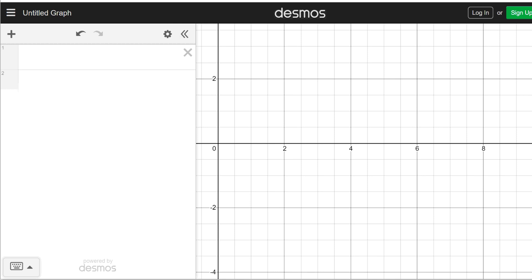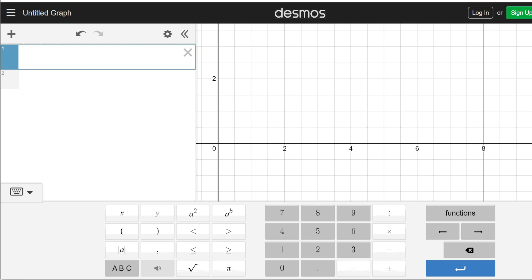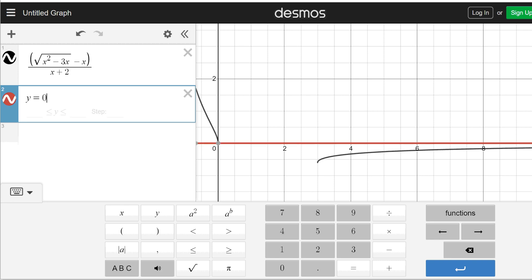In this case, we're going to go back and graph the following. So we take the square root of x squared minus 3x minus x all over x plus 2. The answer was 0, so you're going to type in y equal to 0.